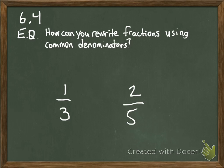If you take a look at these two fractions here, we have one-third and we have two-fifths. What we need to do is find a common denominator for one-third and two-fifths. When we find a common denominator, we're finding a common multiple of the denominators.